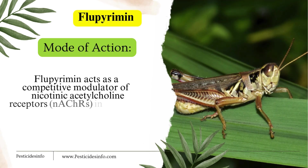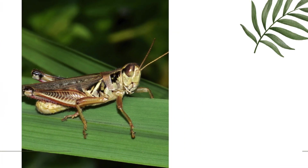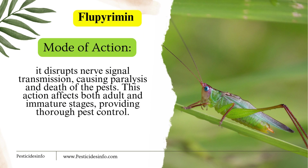Mode of action: Flupyrimine acts as a competitive modulator of nicotinic acetylcholine receptors (nAChRs) in insects. By binding to these receptors, it disrupts nerve signal transmission, causing paralysis and death of the pests. This action affects both adult and immature stages, providing thorough pest control.